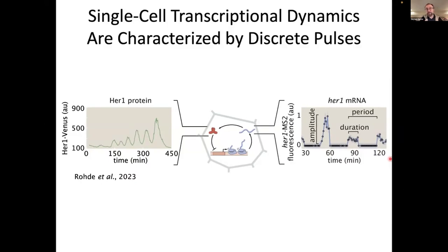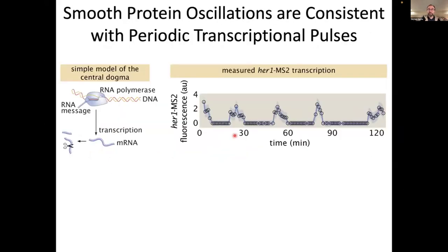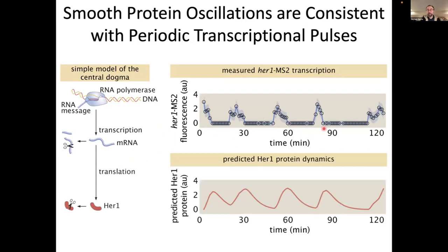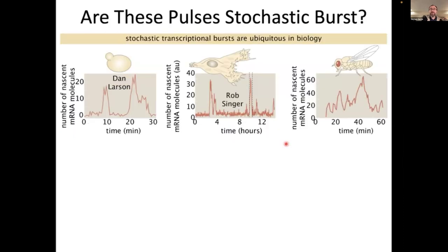These pulses look very different from the smooth protein oscillations. But are they consistent? What you can do is grab our RNA pulses, run them through our model of the central dogma, and you can see that indeed, you would expect smooth protein oscillations. The only issue is that these pulses look a lot like so-called transcriptional bursts that we and others have been studying for a few years and that we keep finding all throughout the tree of life.